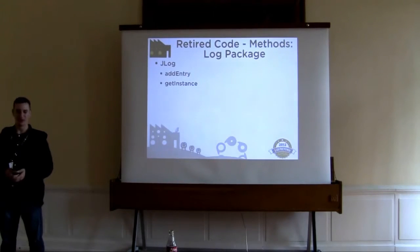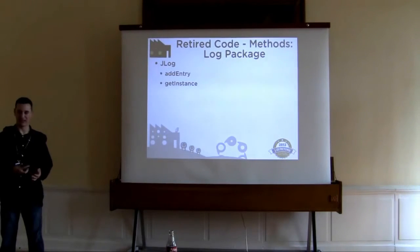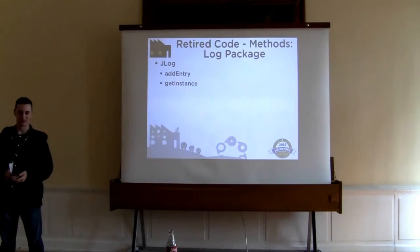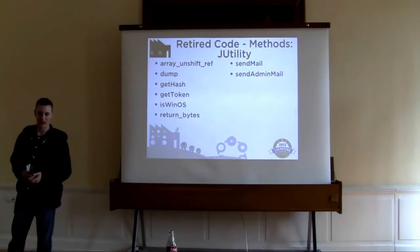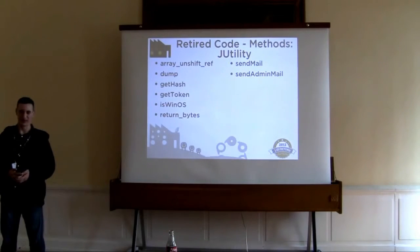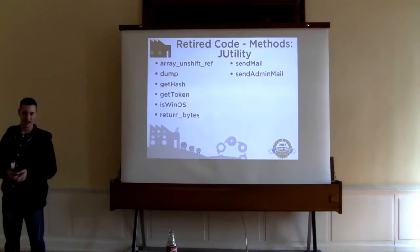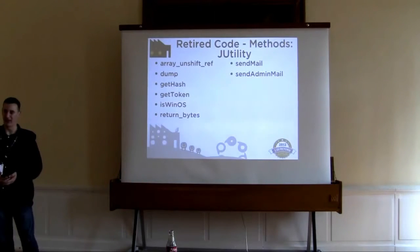In the log package, we've removed the addEntry and getInstance methods. Replacing getInstance is JLog's addLogger method — you have to start your own logger this way instead of getting an already-present instance. The addEntry method tied in with the old getInstance-type processing and was replaced by the add method. In JUtility, we pretty much removed everything but one method. The array, unshift, ref, and dump methods don't have any direct replacements in the API. GetHash and isWinOS are static methods in the legacy JApplication class. GetToken is now handled in JSession. ReturnBytes uses JHTMLNumber's bytes method, and sendMail and sendAdminMail are now handled by the JMail class.